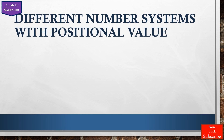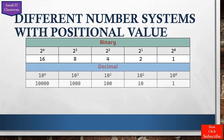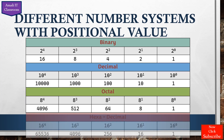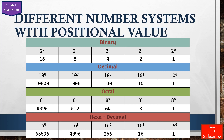In different number systems there is something called the positional value or the weighting factor. Here I have given a table containing all four number systems. In the first row it shows 2 to the power 0, 2 to the power 1, 2 to the power 2, 2 to the power 3, 2 to the power 4, and so on. Likewise, other number systems also give the power of each base — that is what we call the weighting factor or positional value. In binary, 2 to the power 0 is 1, and in all number systems, any base to the power 0 is equal to 1.